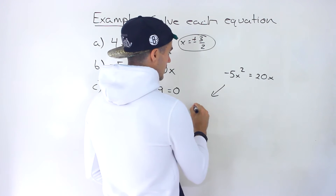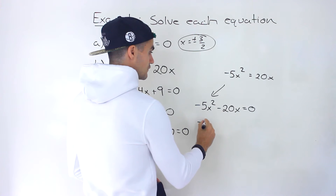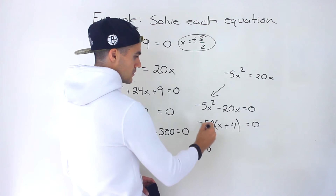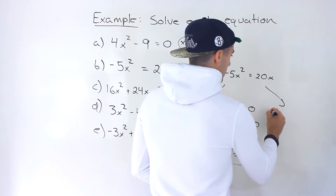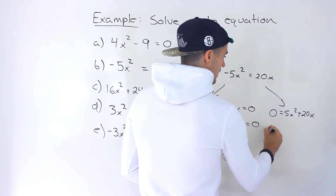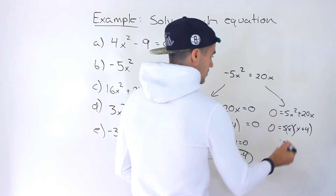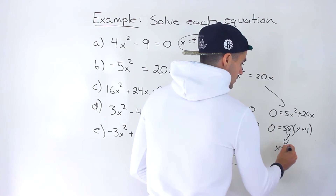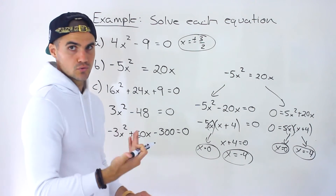Let's do it both ways. Bringing 20x to the left gives negative 5x squared minus 20x equals 0. We can factor out negative 5x, leaving (x plus 4), so the solutions are x equals 0 or x plus 4 equals 0, meaning x equals negative 4. The other way: bringing the left side over gives 5x squared plus 20x equals 0, and factoring out 5x leaves (x plus 4). Whether the constant is negative 5 or positive 5 doesn't matter — the solutions are the same: x equals 0 and x equals negative 4.